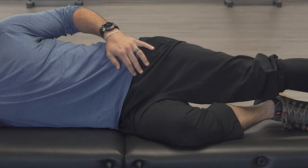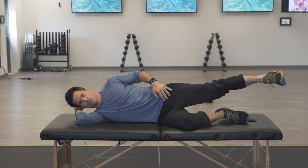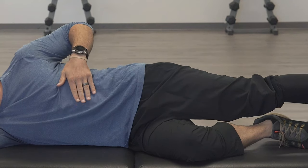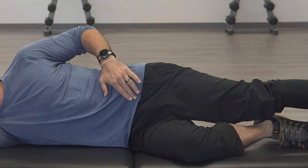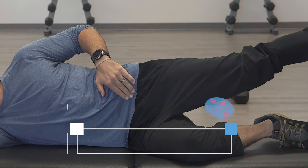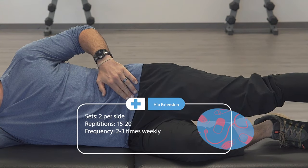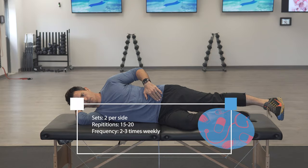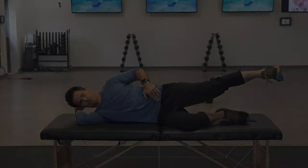Once the hip is braced, lift the left leg upwards and backwards, making sure that no accessory motion occurs from either the hip or the lower back. Bring the leg up for two seconds, then slowly back towards the floor for four seconds. Complete 20 repetitions. You'll want to complete two sets of 20 repetitions, giving yourself a minute between sets before moving on to the opposite side.